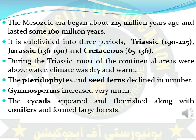In our previous lecture, the Paleozoic life ended at 225 million years ago, and the Mesozoic time period started from 225 million years ago and lasted for about 160 million years. The Mesozoic time period was divided into three periods: Triassic (225–190 million years ago), Jurassic (190–136 million years ago), and Cretaceous (136–65 million years ago).